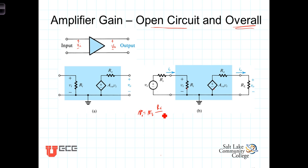And similarly at the output, the output voltage V_out is equal to the open circuit voltage A_v0 times V_in, times the voltage divider R_L over R_L plus R_out.